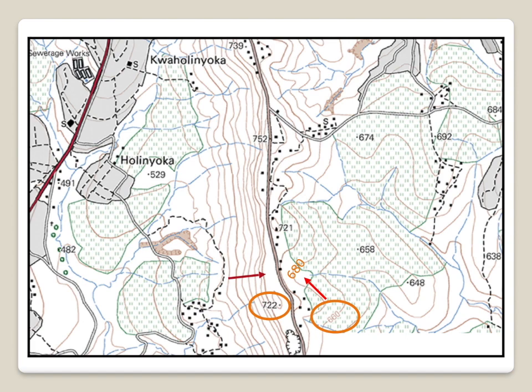Let's look at how we can use a spot height to work out the height of a contour line. We want to use spot height 721 to work out the height of that contour line over there. We know that the difference in height between one contour line and the next is 20, and we know that the spot height marks the highest point. So the height of that contour line has to be lower than 721. The nearest multiple of 20 lower than 721 is 720. So that's the height of that contour line — 720.